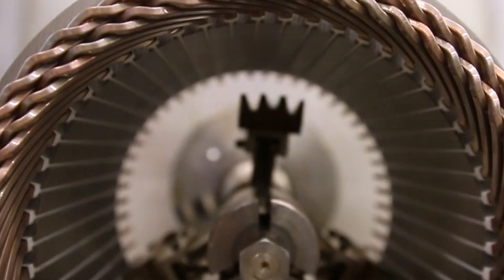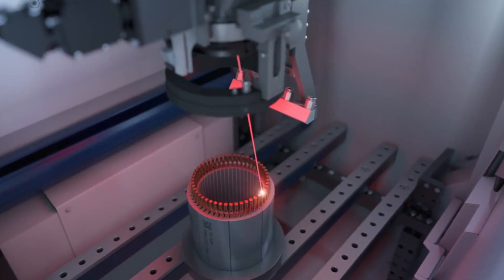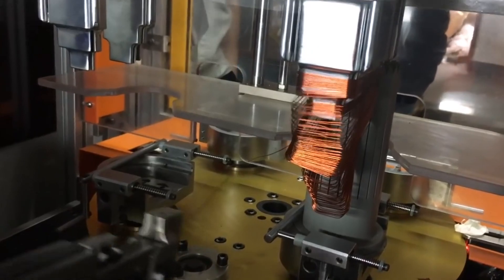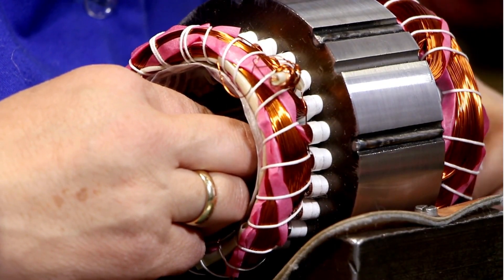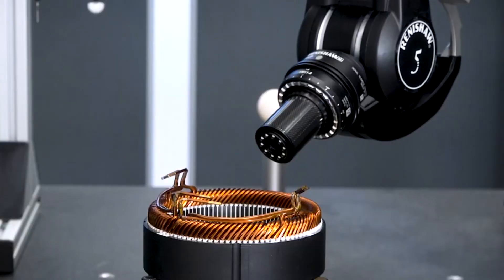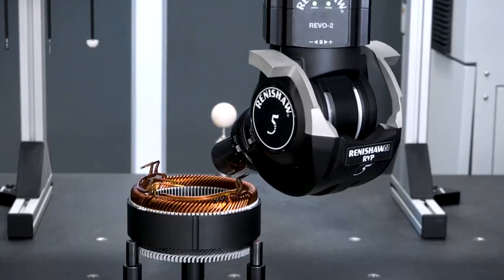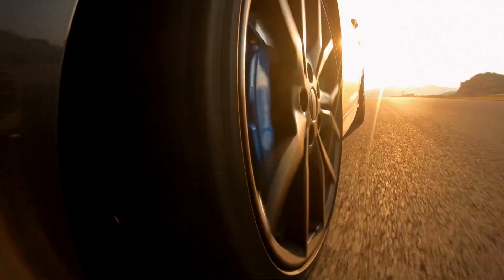Another benefit of this technology is its ability to reduce the number of connections needed in the winding process. Traditional winding methods require many connections between coils, which can lead to higher resistance and reduced efficiency. With hairpin technology, fewer connections are required, resulting in a more reliable and durable motor.